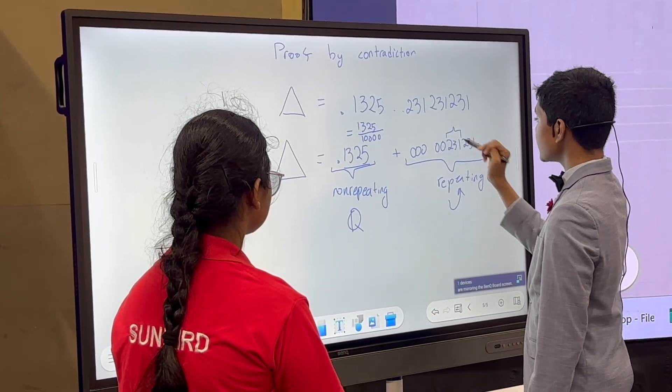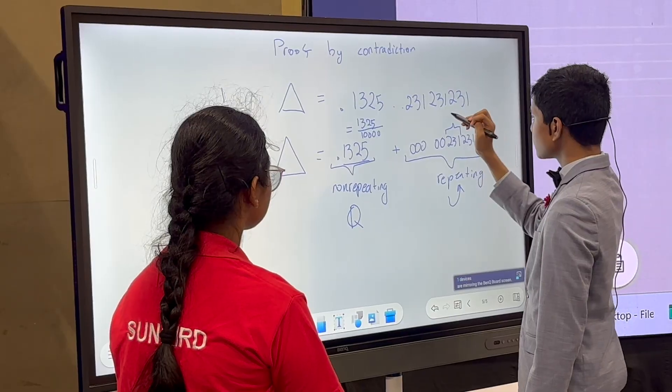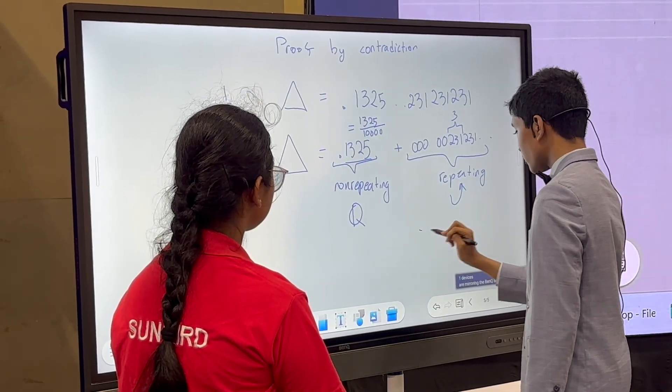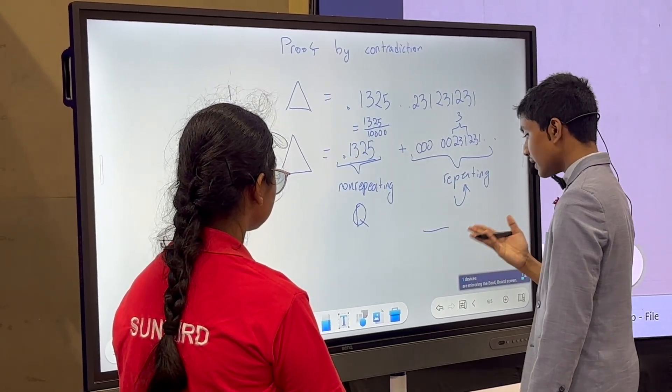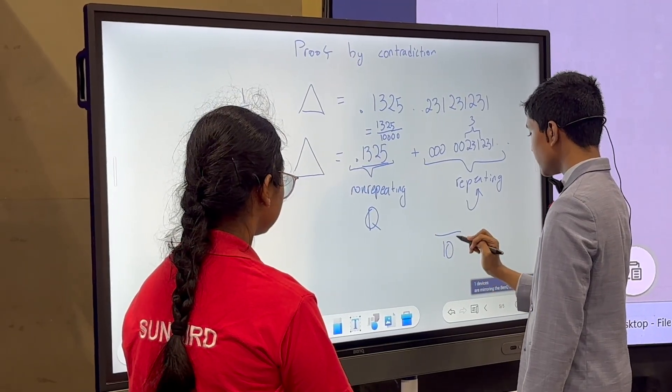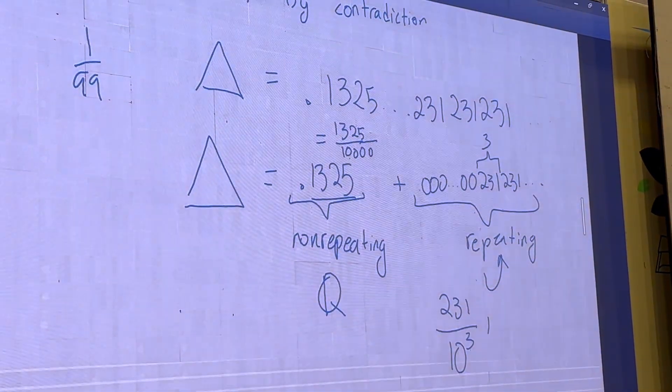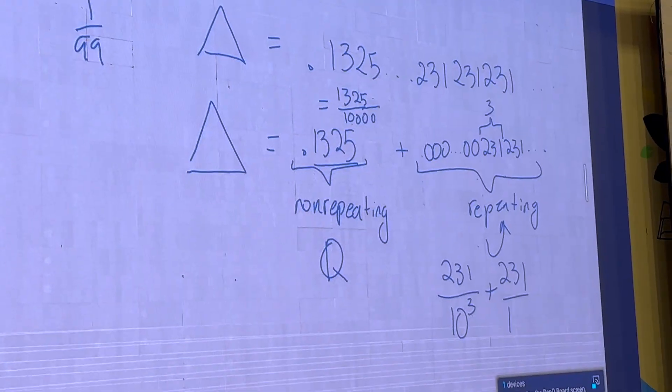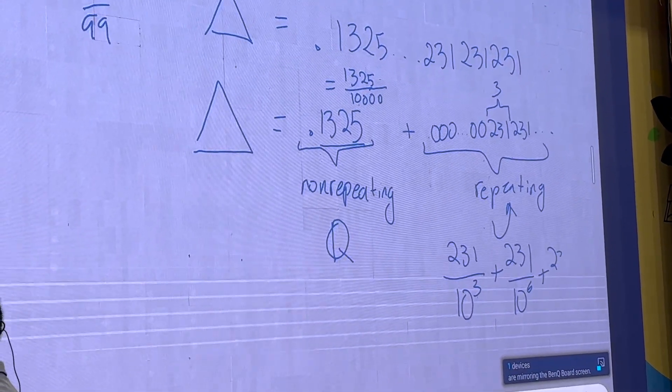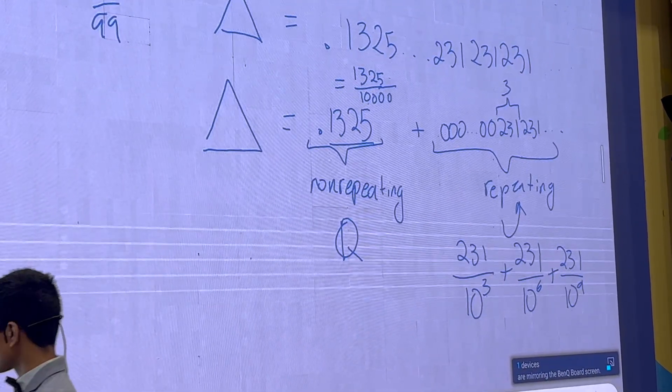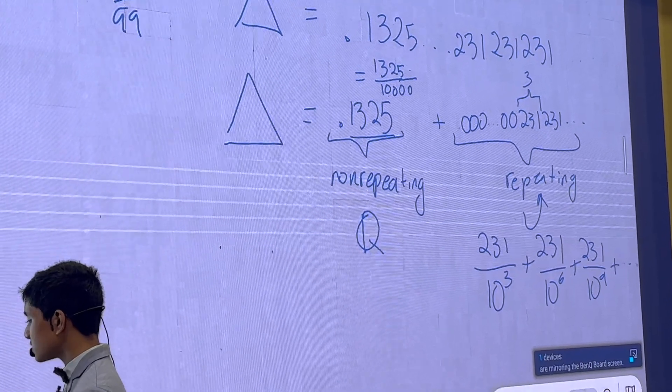Depending on how many digits are in the part that repeats, if the number of digits is three, for example, then the geometric series common ratio is going to be 10^3. So the first is going to be 231/10^3. The second is going to be 231/10^6. The third is going to be 231/10^9. I'm using 231 as an example, and so on and so forth.